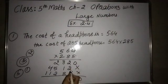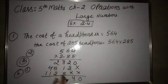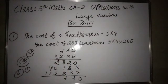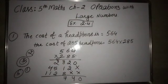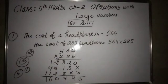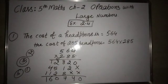Now we add the partial products: 0, then 4, then 8 plus 8 = 16, 16 plus 1 = 17 so 7 with 1 carry. Then 5 plus 2 = 7, 7 plus 2 = 9, 9 plus 1 = 10 so 0 with 1 carry. Then 5 plus 1 = 6. So the cost of 285 headphones comes out to this answer.